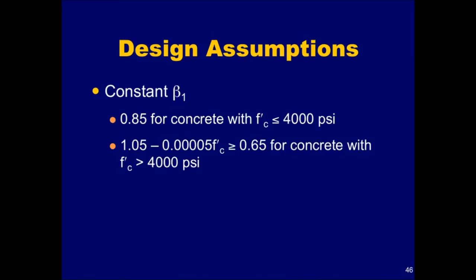The constant beta 1 is equal to 0.85 for concrete with a specified compressive strength less than or equal to 4,000 psi. For concrete with a compressive strength greater than 4,000 psi, beta 1 is reduced continuously at a rate of 0.05 for each 1,000 psi of strength above 4,000 psi. In no case shall beta 1 be taken less than 0.65. In other words, beta 1 is equal to 0.65 for any concrete with a compressive strength greater than or equal to 8,000 psi.